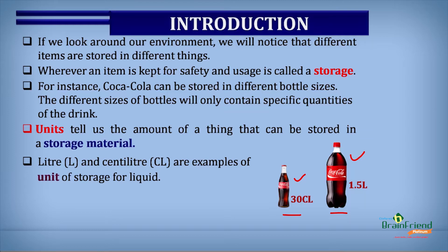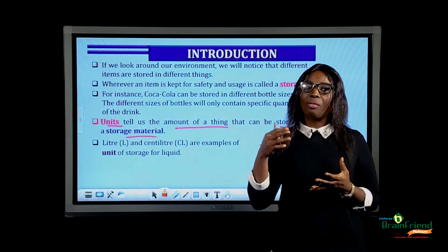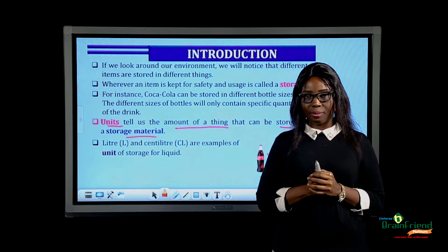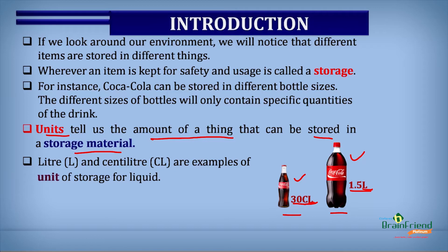These bottles are used to store the drink. You can see they are of different sizes, and these different sizes have labels called units. This small one is labeled 30 CL, which stands for 30 centiliters. And the bigger one is labeled 1.5 L, which stands for 1.5 liters. The CL and the L are units of measurement for liquids.